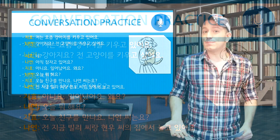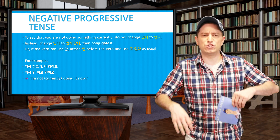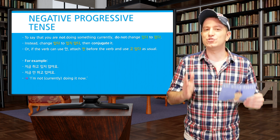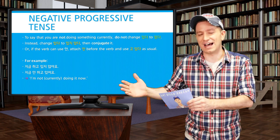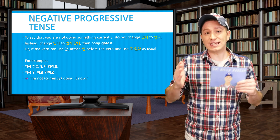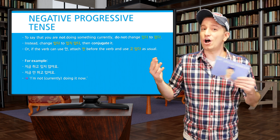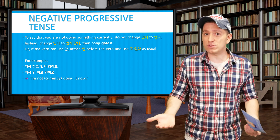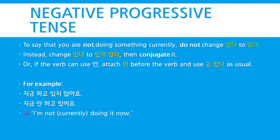However, if you want to make the progressive tense into a negative and say that you are not currently or not continually doing something, do not change 고 있다 into 고 없다. Instead, change 고 있다 into 고 있지 않다. Alternatively, you can also just make the verb that comes before the progressive tense negative by using 안. For example: 지금 하고 있지 않아요, or 지금 안 하고 있어요 — both mean 'I'm not doing it now' or 'I'm not currently doing it.'